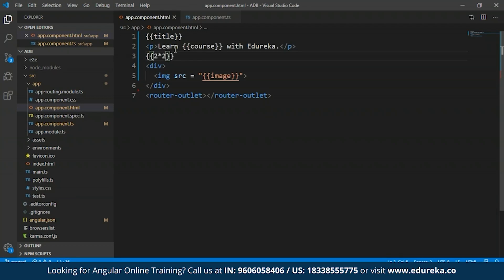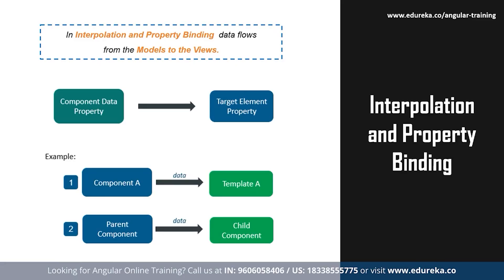Now talking about property binding — in property binding, the value flows from a component's property into the target element's property. Therefore property binding can be used to read or pull data from the target elements or to call a method that belongs to that target element. Events raised by the element can be acknowledged through event binding, which will be covered later. In general, the component property value is set to the element property using property binding.